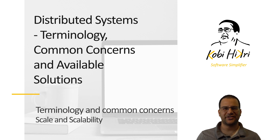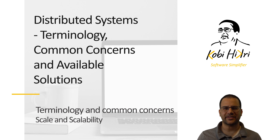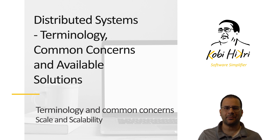Hi and welcome to the Distributed Systems Terminology, Common Concerns and Available Solutions Crash Course. This chapter is Terminology and Common Concerns, and will be split across several episodes. If you feel well versed with a specific term, feel free to skip the video, though I advise you do watch — I might have a new insight for you. This episode is about scale and scalability.